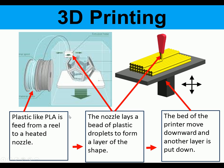In the 3D printing process, the printer bed moves down a small amount — about a millimetre or less — and another layer of plastic is put down, building up the object layer by layer.